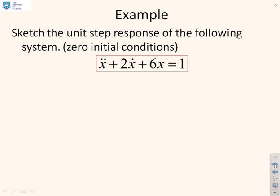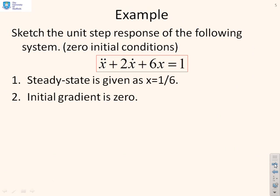Let's start with an example then. We've got ẍ + 2ẋ + 6x = 1. And we want to do a sketch of the response of this system. Now, first of all, let's look at the steady state. We can see that the steady state comes from these two expressions here, which is why we get x = 1/6. You'll also remember from the initial conditions, the initial gradient is 0.